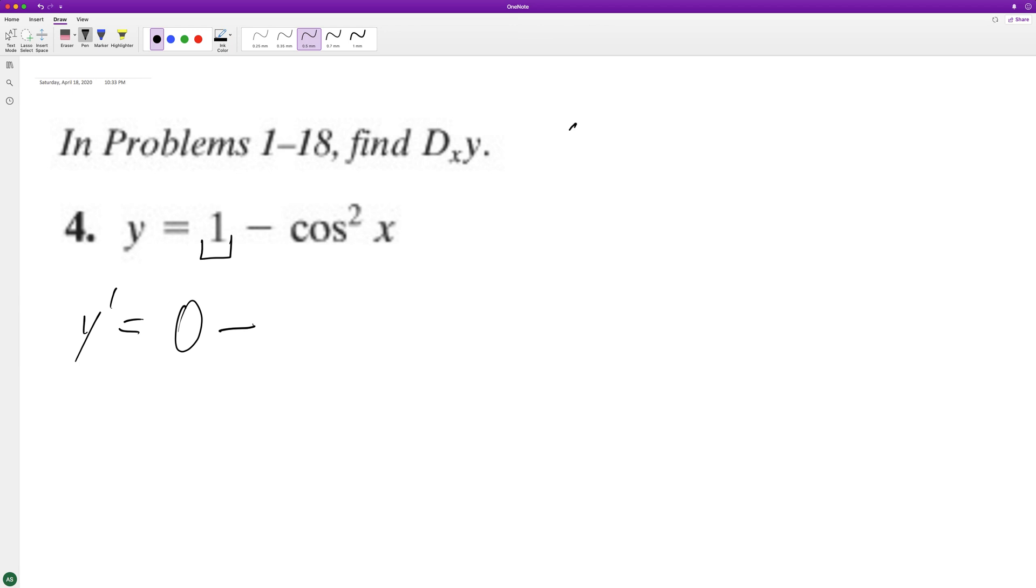Minus, and we can write this as cosine of x squared, it's the same thing. So pull down the 2, the derivative of the cosine is going to be negative sine, and then what's left over after this gets raised to 1 is just cosine of x.